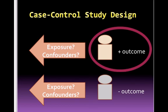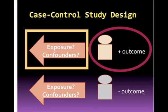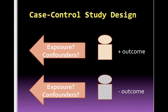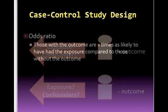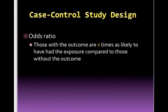Cases, or the group with the outcome, are studied for the presence of a predetermined exposure or risk factor. Other information such as demographics and comorbidities will also be collected. The same information is collected for the controls, or the group without the outcome. The measure of association calculated for case control studies is the odds ratio. This differs from relative risk because the outcome has already occurred and we cannot comment on the incidence of disease.